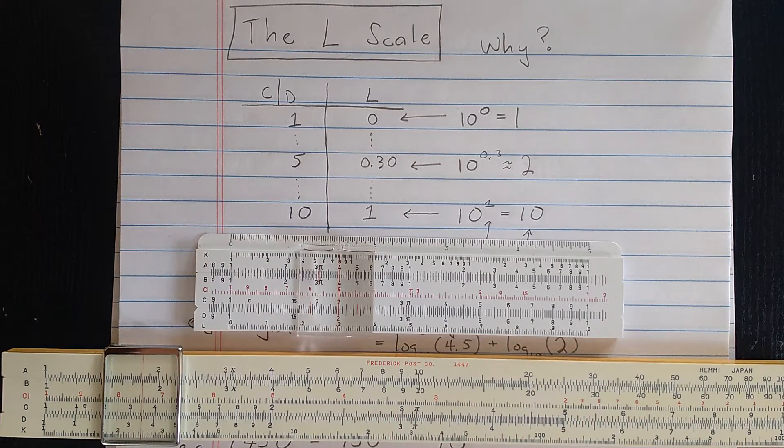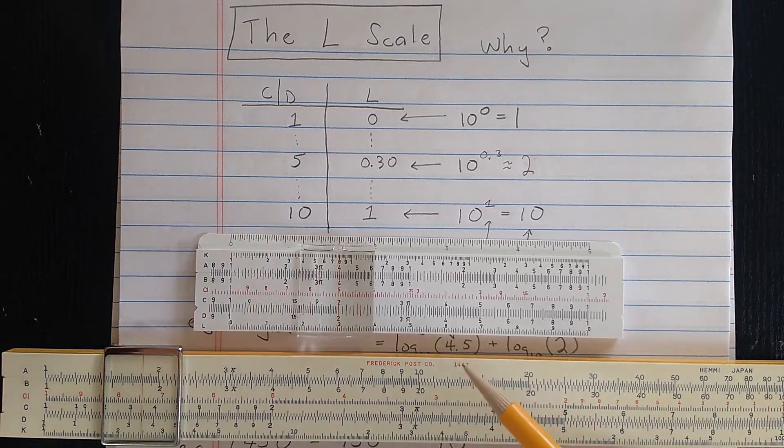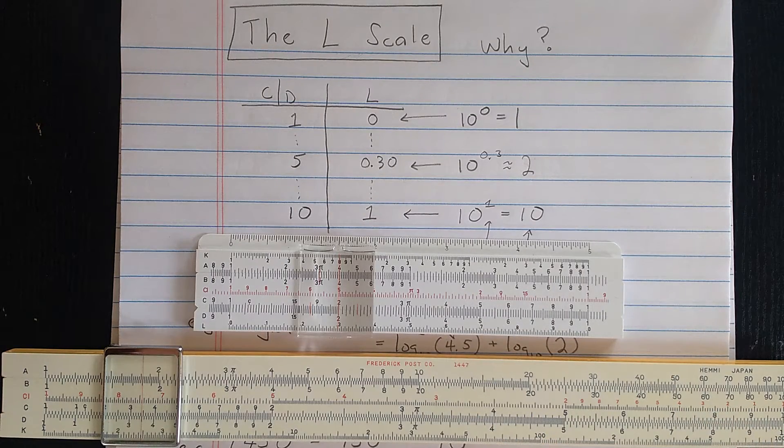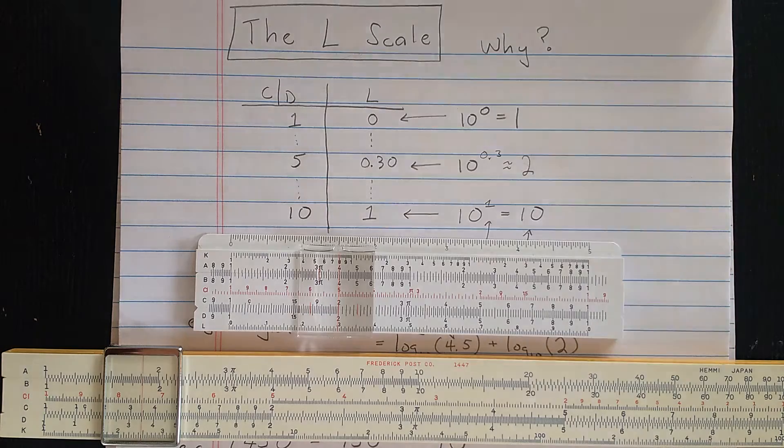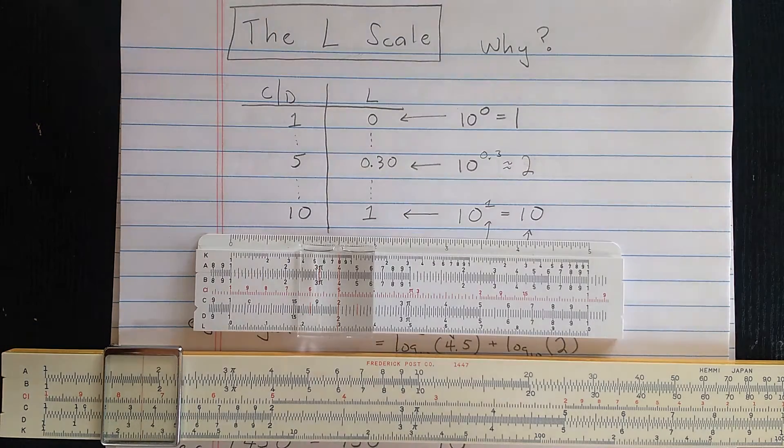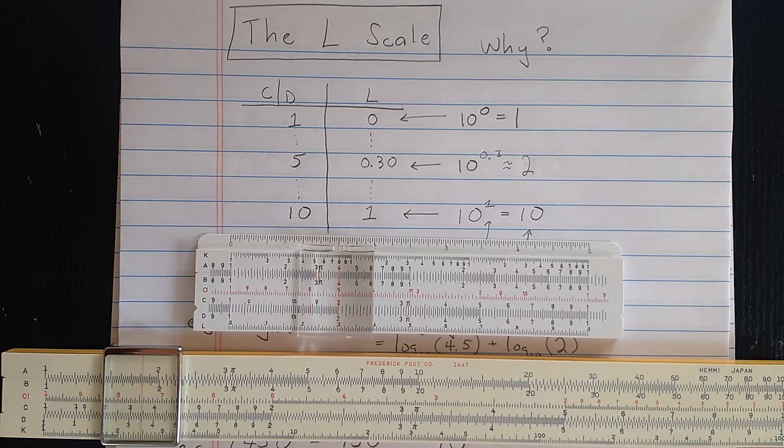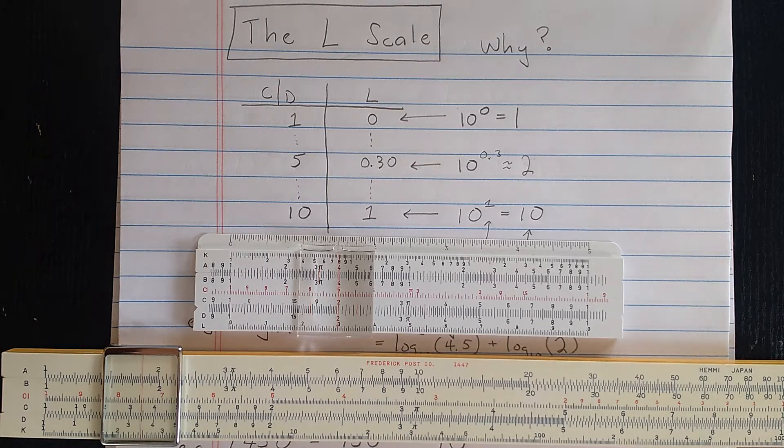When Napier invented logarithms, his idea was that they would simplify computations, especially multiplication and things like exponentials, square roots. He says to compute square roots when you have the logarithm, all you need to do now is divide by 2. So it reduces problems like square roots to things like dividing by 2.